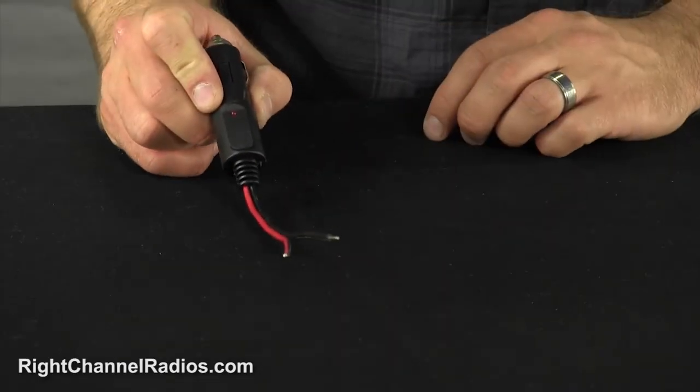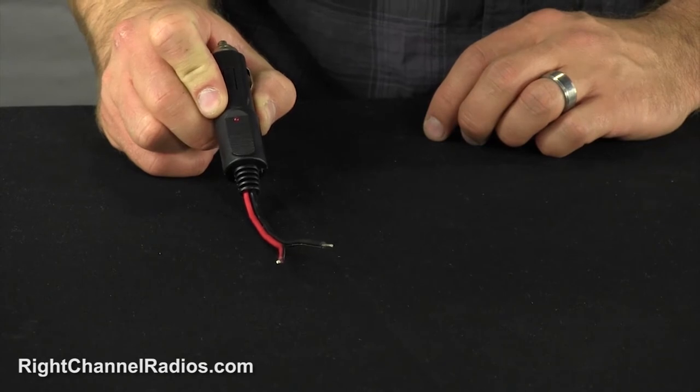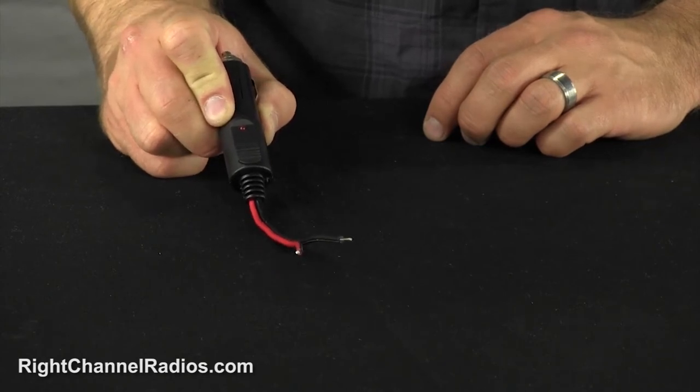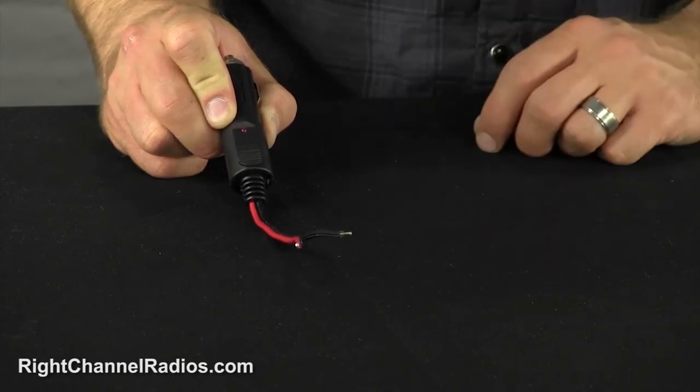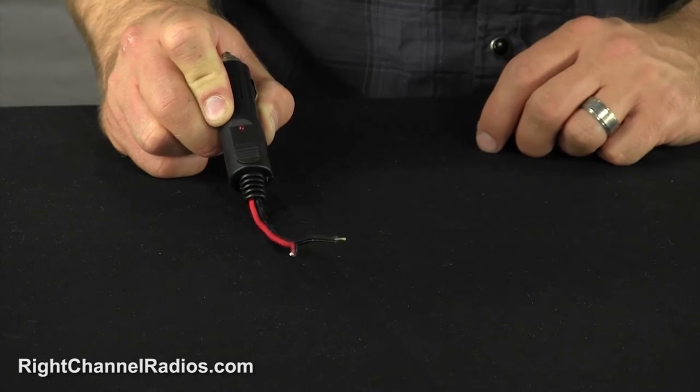Let's take a quick look at this. You can see that on the end that would connect to the power wires in your CB are just two positive and negative wires, red and black. Pretty straightforward.